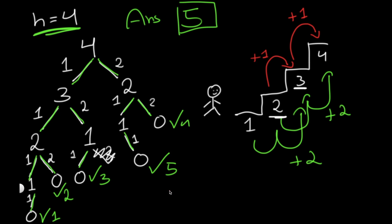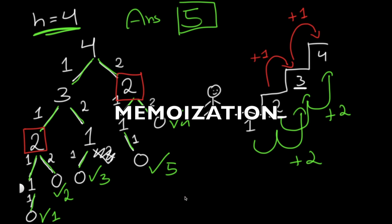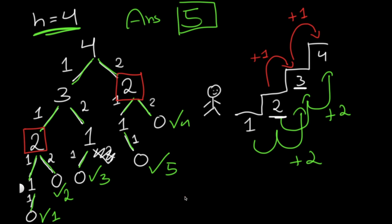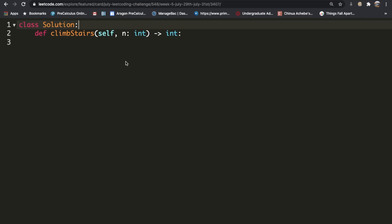One thing to point out: you will be making the same recursive call several times. For example, n equals two appears twice in the tree, so we'd be computing it twice — a waste of time and memory since we already found the solution once. To avoid this, we're going to use memoization: storing computed values in a dictionary so that when the same n value comes up again, we just look it up instead of recomputing.